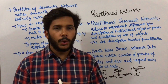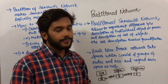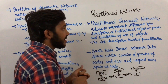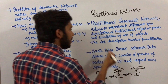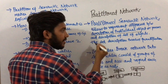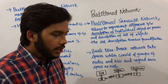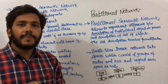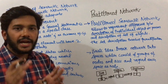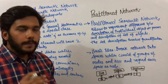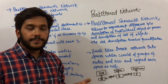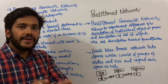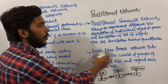In this video I am going to talk about partition network. Partition semantic network allows us to represent the difference between the description of an individual object or process and the description of a set of objects. The set description involves quantification. In a partition semantic network, an object is one thing and a set of objects is a different thing.